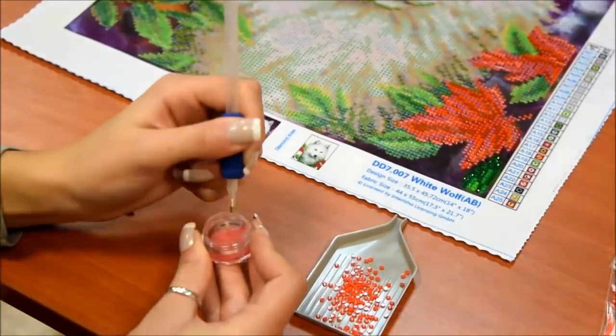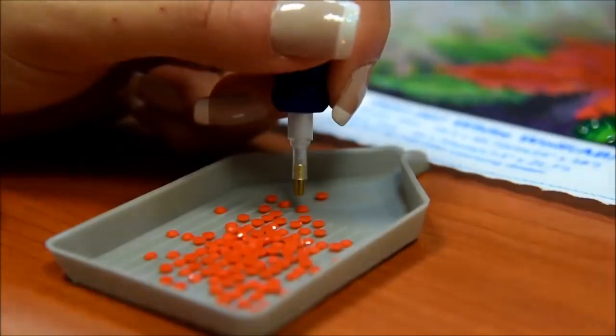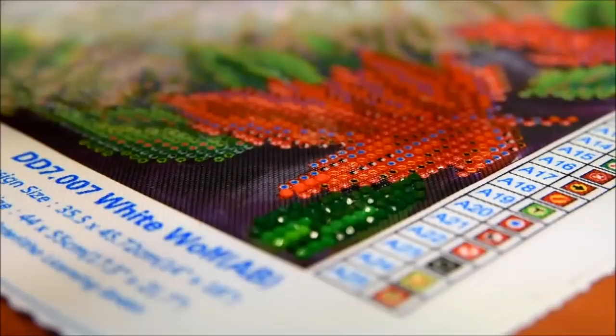Pick up a diamond from the caddy, making sure to place the head of the stylus over the round, faceted side. Place the diamond onto the corresponding symbol on the chart.